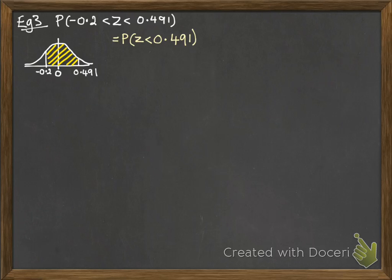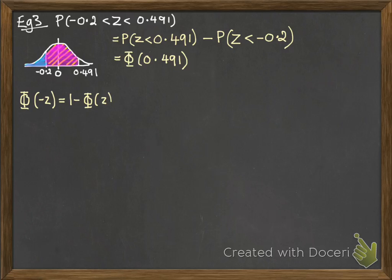So we can do the probability that z is less than 0.491. That would give us that area. So then we need to take off the probability that z is less than minus 0.2 there. So the first one's easy, we can just do Φ of that. But we need to use this result where Φ(−z) is equal to 1 minus Φ(z) because of the symmetry of the curve.